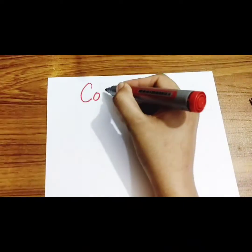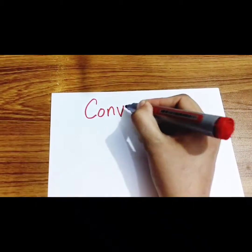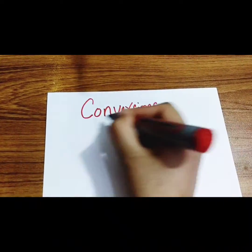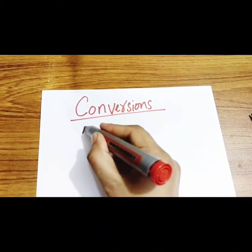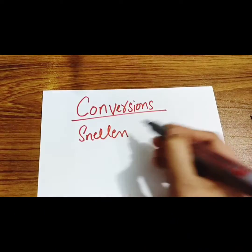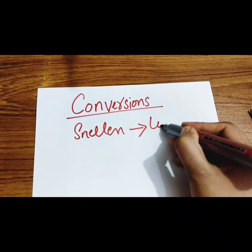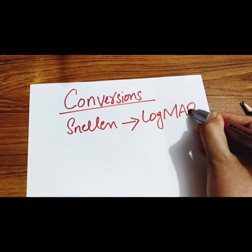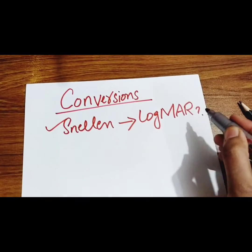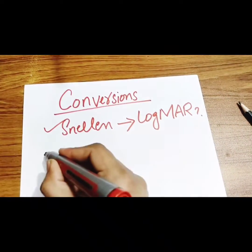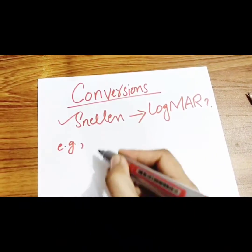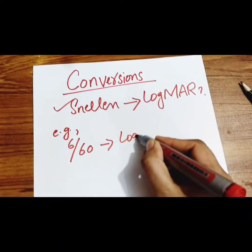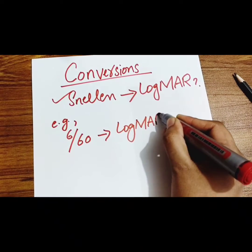In this video I will explain conversions. Let's see how we convert a Snellen chart reading into logMAR reading. For example, we are having 6 by 60 Snellen chart reading and we have to convert it into logMAR reading.